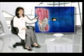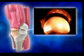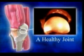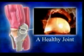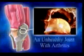Let us see some examples of a malfunctioning immune system. Rheumatoid arthritis is an autoimmune disease. The immune system mistakes our joints as enemy cells and tries to destroy them.